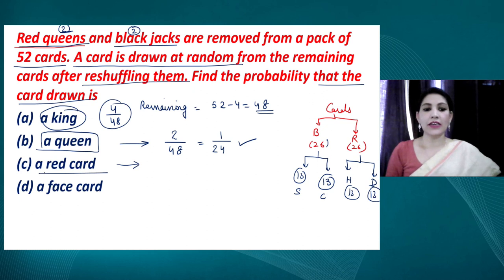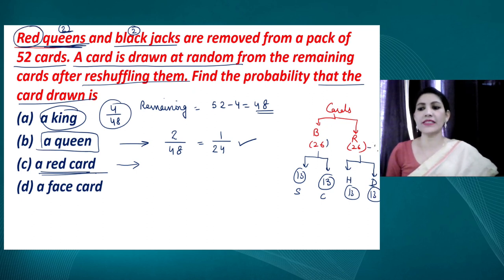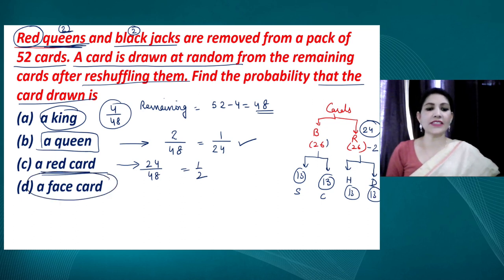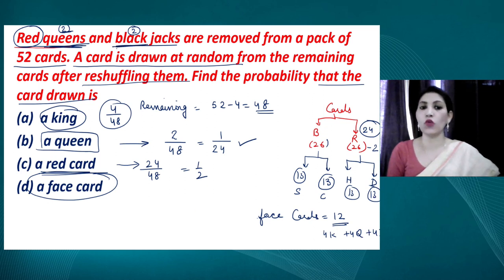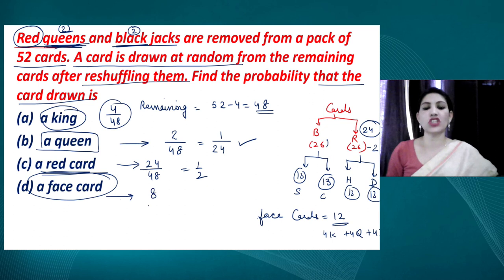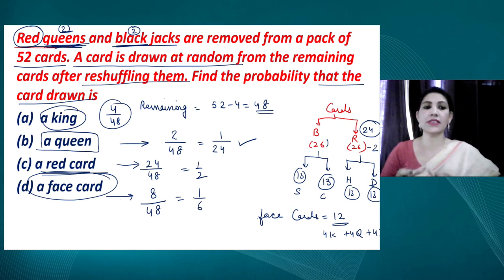For finding the probability of drawing a red card: normally there are 26 red cards, but both removed queens were red, so 24 red cards remain. The probability is 24/48, which simplifies to 1/2. For face cards: there are 12 face cards total — 4 kings, 4 queens, and 4 jacks. Since 2 red queens and 2 black jacks were removed, 4 face cards are gone, leaving 8 face cards. The probability is 8/48, which simplifies to 1/6.